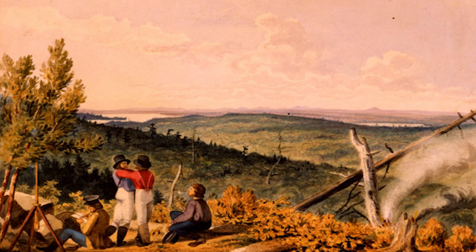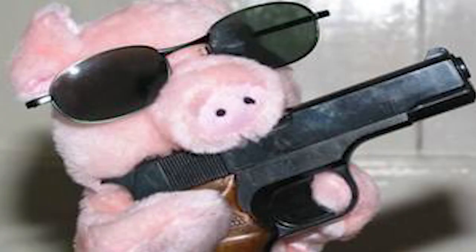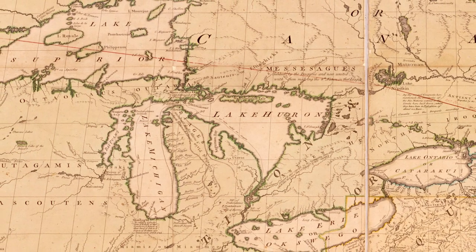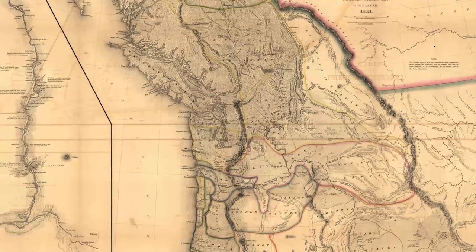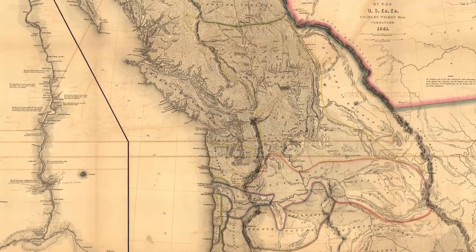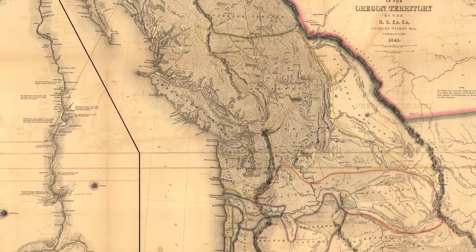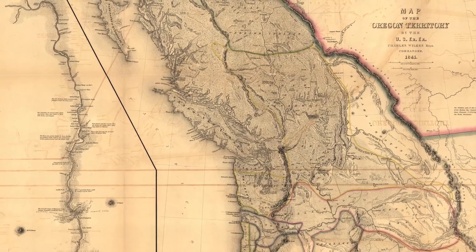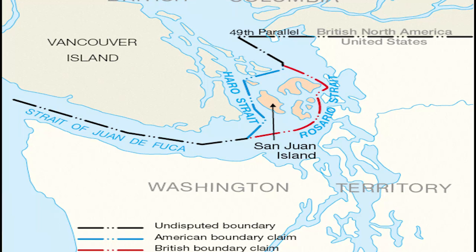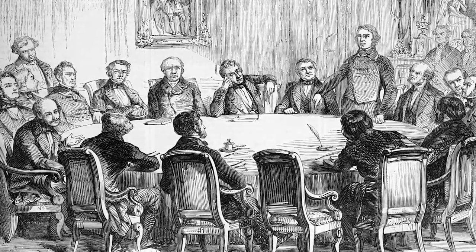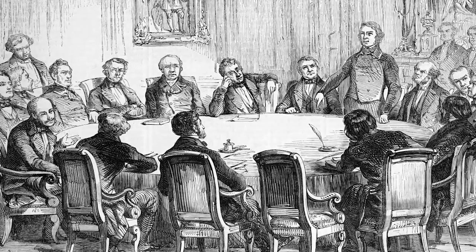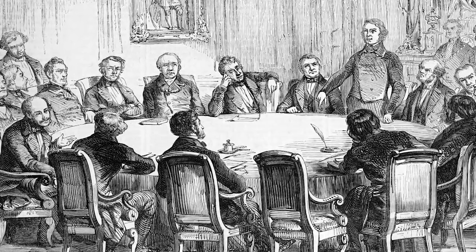Continuing with conflicts between these two nations was the Pig War of 1857, again arising from a border dispute between British North America and the United States. The Oregon Treaty of 1846 set the border between Oregon Country and British Columbia, and also set the boundary between Vancouver Island and what is now Washington State, stating it would be split down the middle strait. The dispute arose as two different straits could be interpreted as the middle, leaving the San Juan Islands as the disputed land. A commission was set to fix the dispute but neither side agreed.